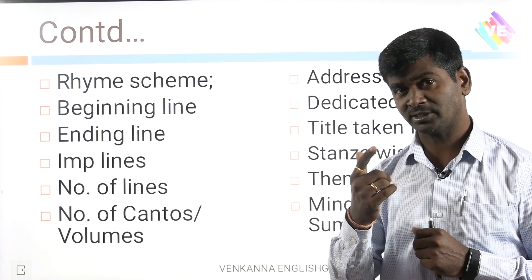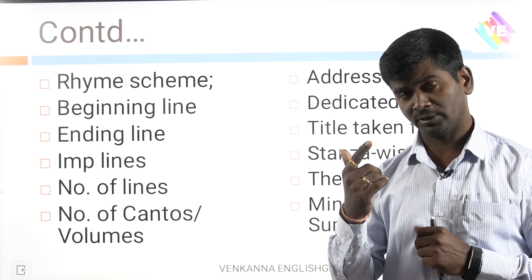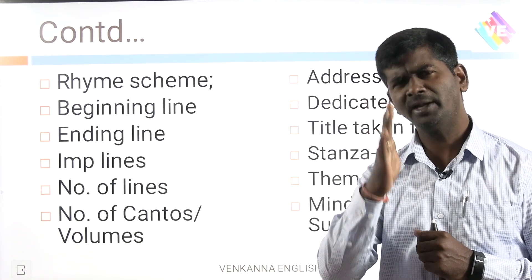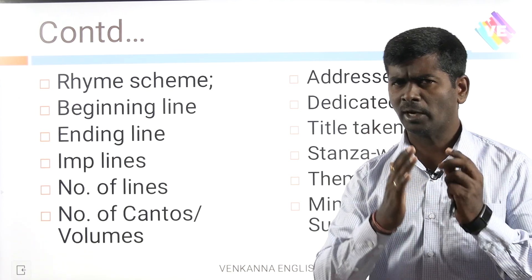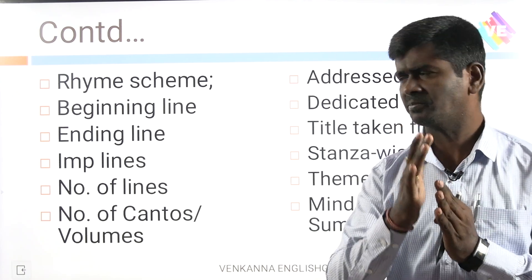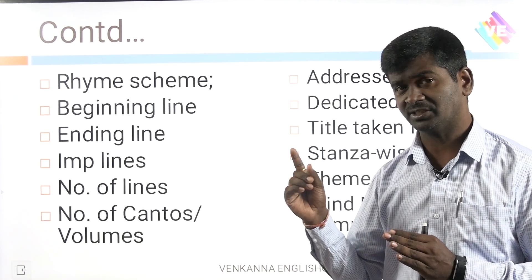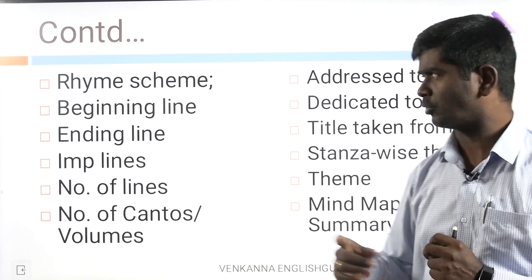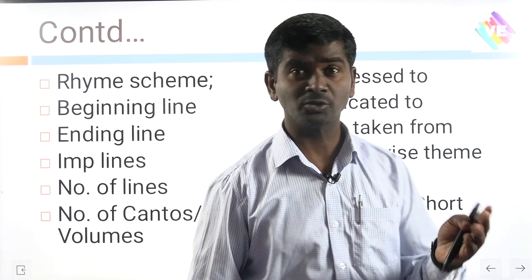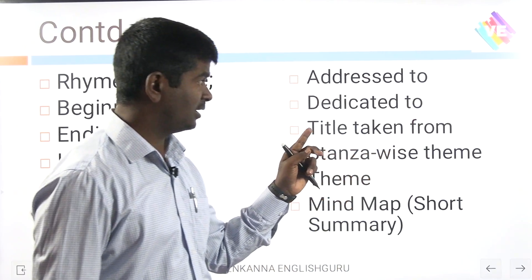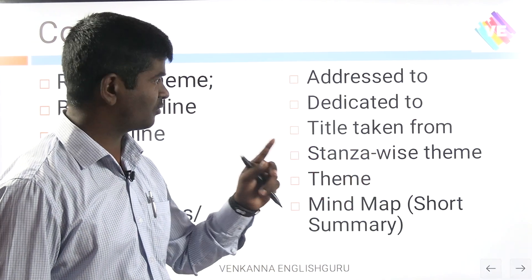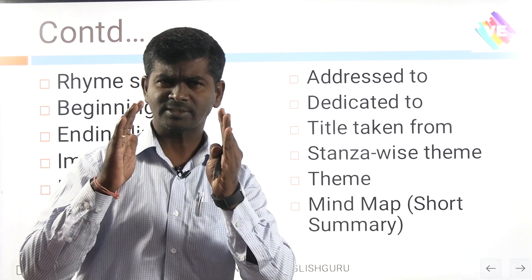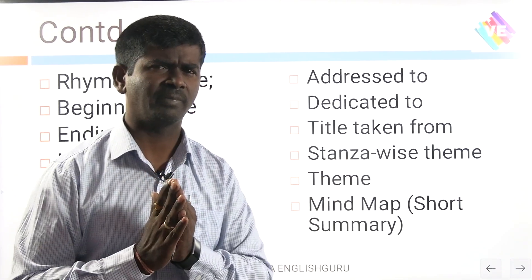There are bits — Ode to a Nightingale, Ode to Autumn, or To the West Wind — how many lines are there? There were plenty of bits once you referred to previous question papers. Next, number of sections, number of cantos, number of stanzas — very, very important. And it is addressed to, it is dedicated to, title taken from, stanza-wise theme, broad theme, and summary, as a part of this mind map.